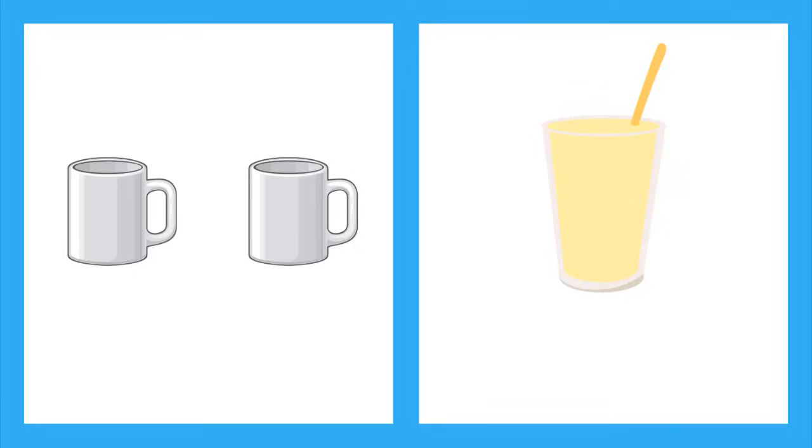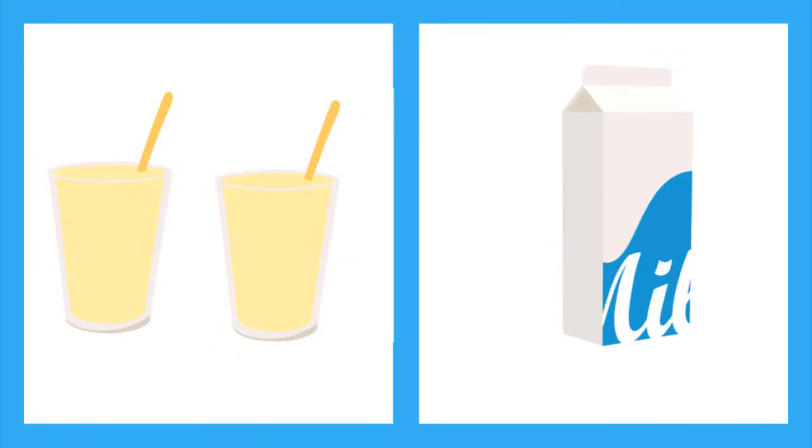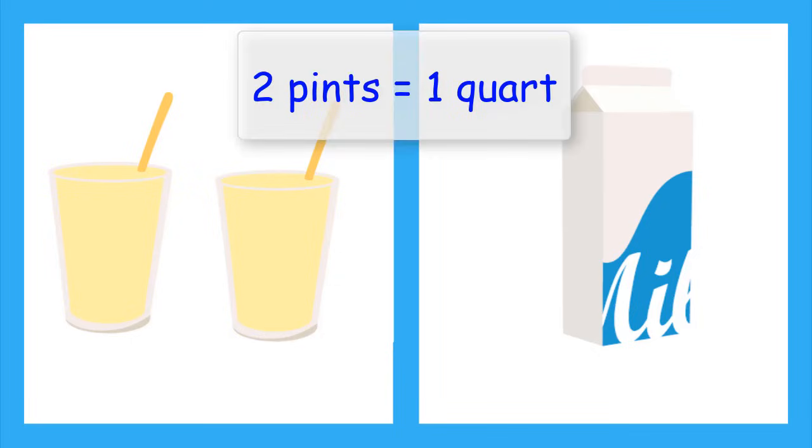Let's compare cups and pints. There are two cups in one pint. So we can say two cups equals one pint. Now let's compare pints to quarts. There are two pints in one quart. So we can say two pints equals one quart.